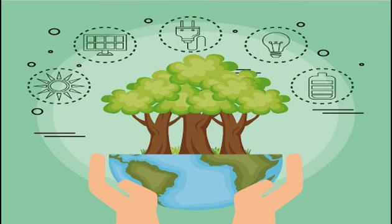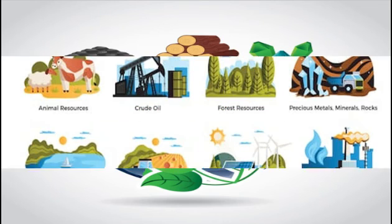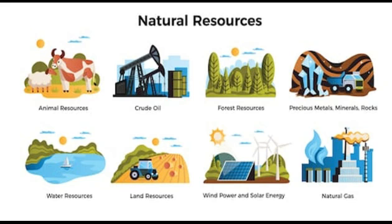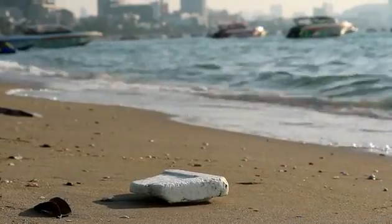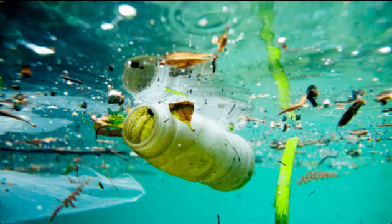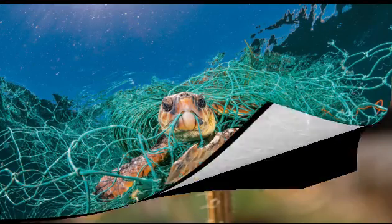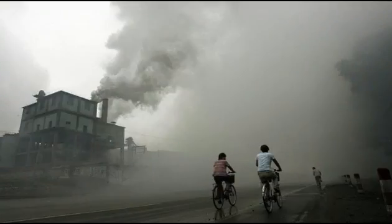Natural resources means prakartik sansadhan. We have also polluted the environment. Pollution is the process of making the land, water or air dirty and unsafe to use. It threatens the life of millions of animals, plants and human beings around the world.